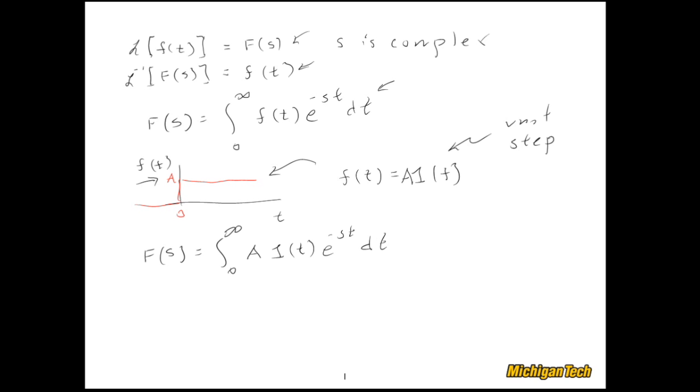Now before we jump in and do this integration, if we stare at this a minute, we can see that all of this strange complexity here with the unit step function actually goes away when we look at our limits of integration. We're integrating from 0 to infinity. This function is exactly equal to 1 over 0 to infinity, and this is a constant. So I can rewrite this integral a little bit more nicely as the integral from 0 to infinity of just e to the negative st dt.